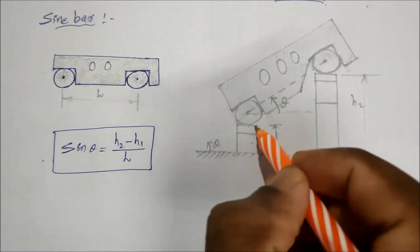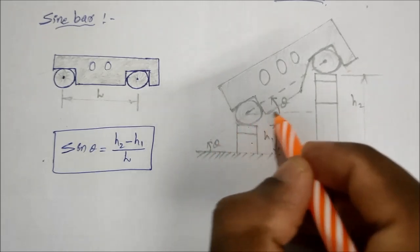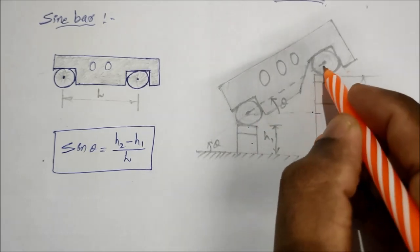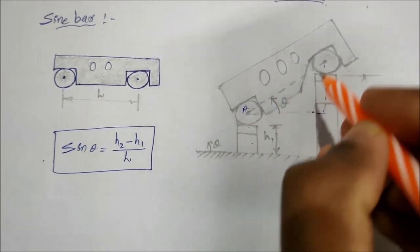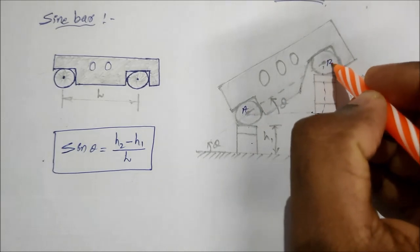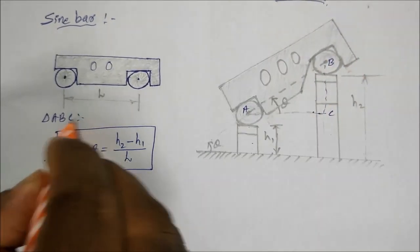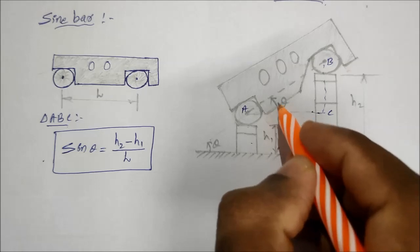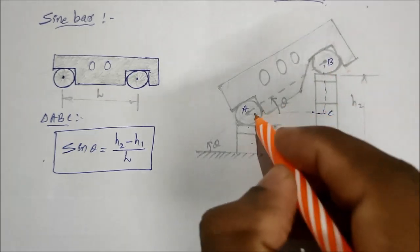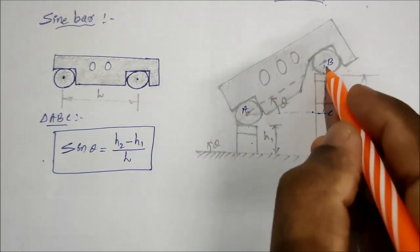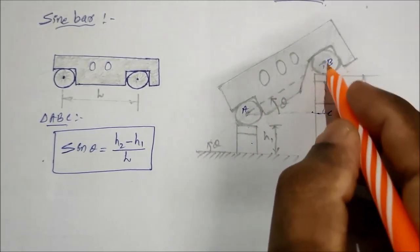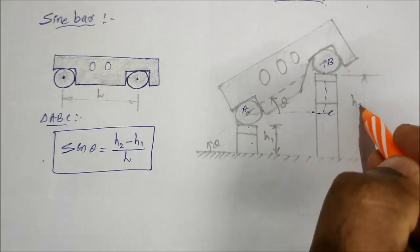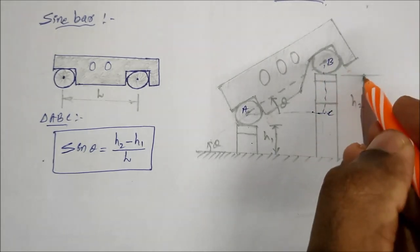This gives a trigonometric equation for angle theta. Considering triangle ABC, sin theta equals the opposite side divided by hypotenuse. The opposite side is h2 minus h1, and the hypotenuse is the center-to-center distance of the sign bar rollers.